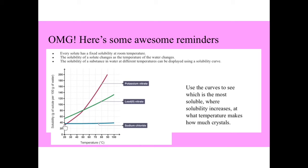Normally, as temperature increases, the solubility of a solute increases. But some of them remain constant whatever temperature is. The solubility of a substance in water at different temperatures can be displayed using a solubility curve. Use the curves to see which is the most soluble. So this one is the most soluble as temperature increases.